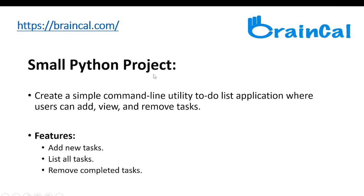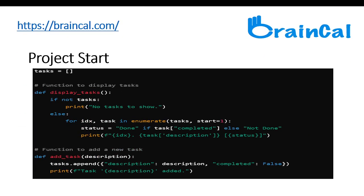Now we're going to create a small Python project. An example task is to create a simple command line utility to-do list application where users can add, view, and remove tasks. The key features are add new tasks, list all tasks, and remove completed tasks. Starting the project, we have tasks with square brackets, and then a function to display tasks as shown in the comment.